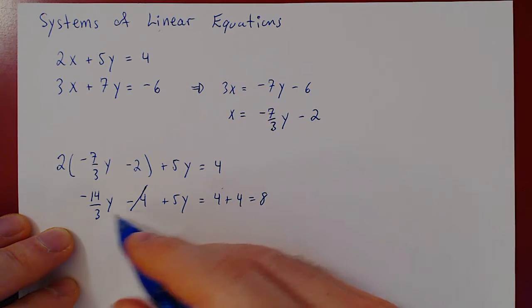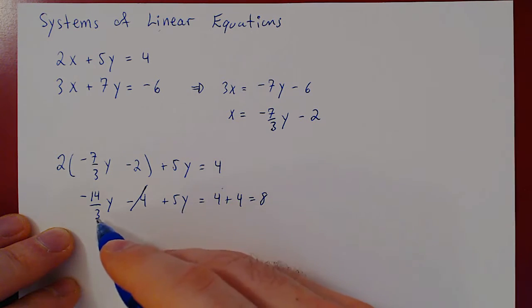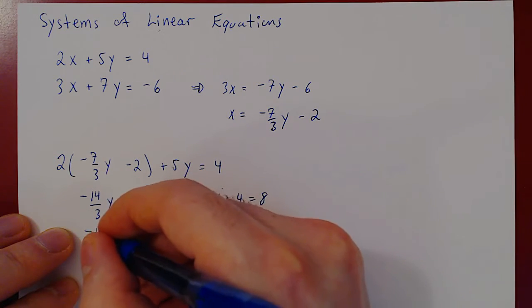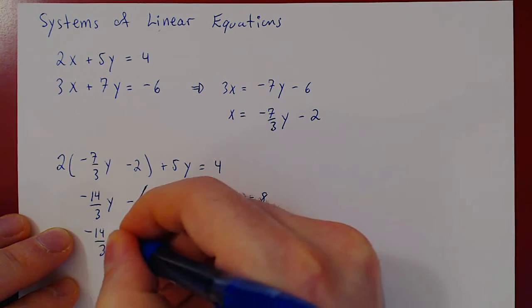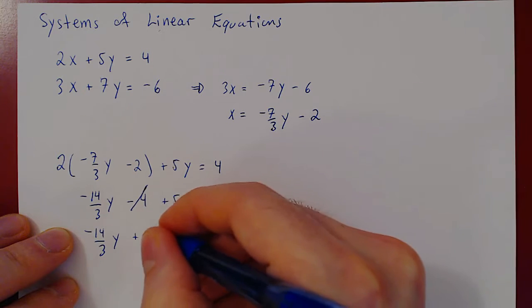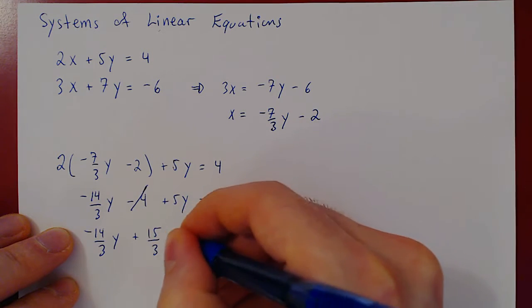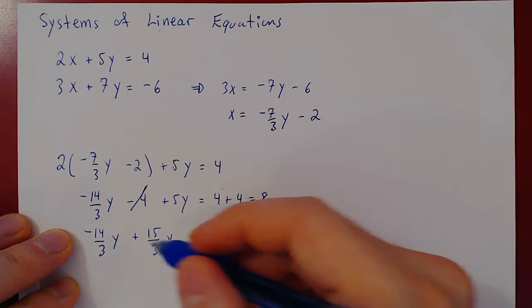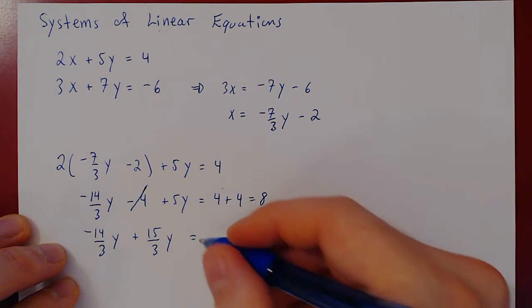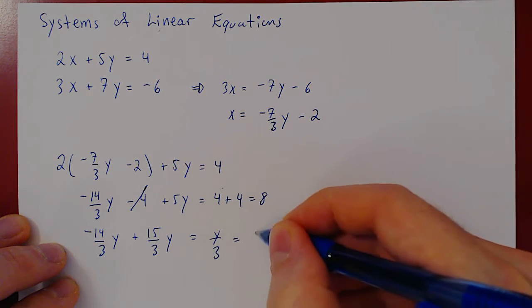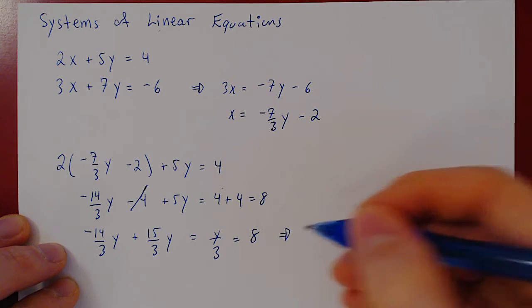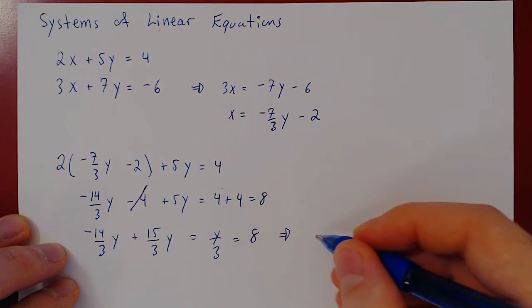And here, well, you want this to be out of 3, so you have negative 14 over 3y. 5 is 15 over 3y. So all you're left with is 15 minus 14 is 1, so it's y over 3 equals 8. Multiply by 3, and so y is 24.